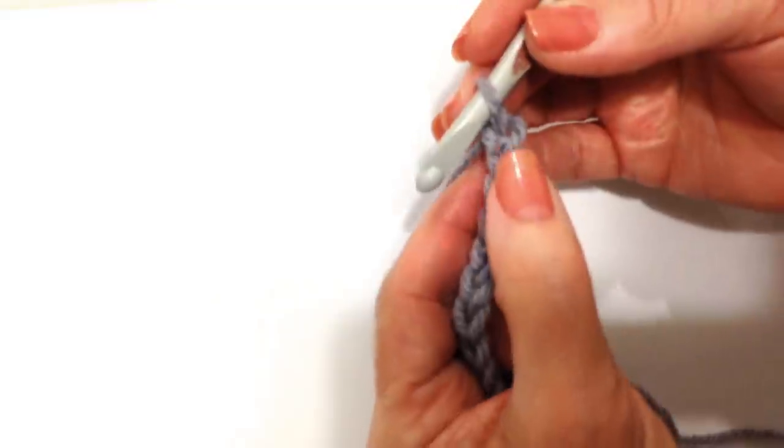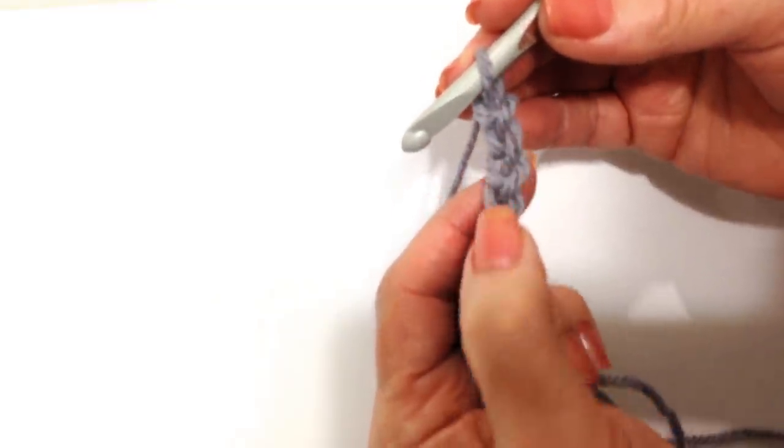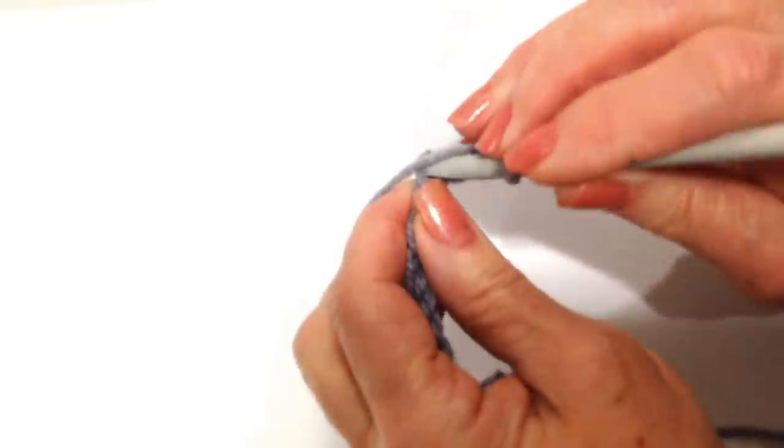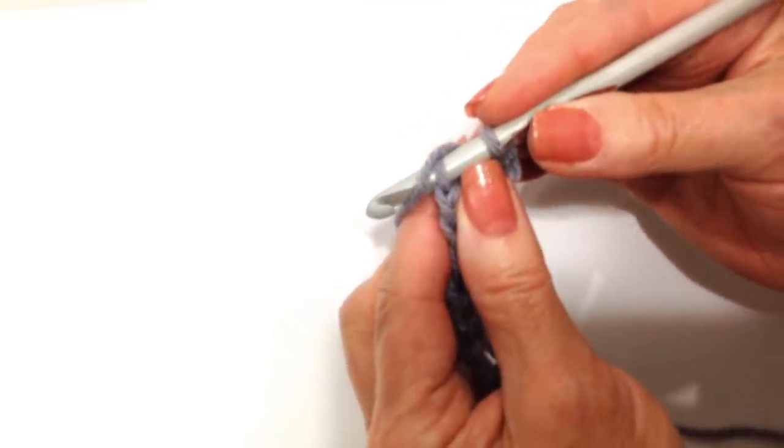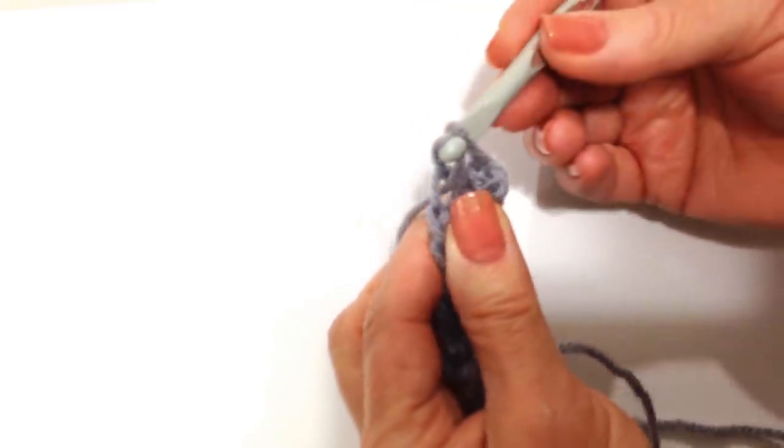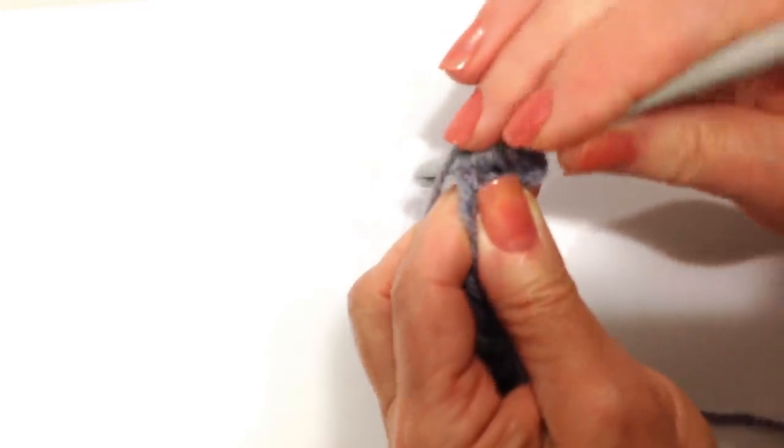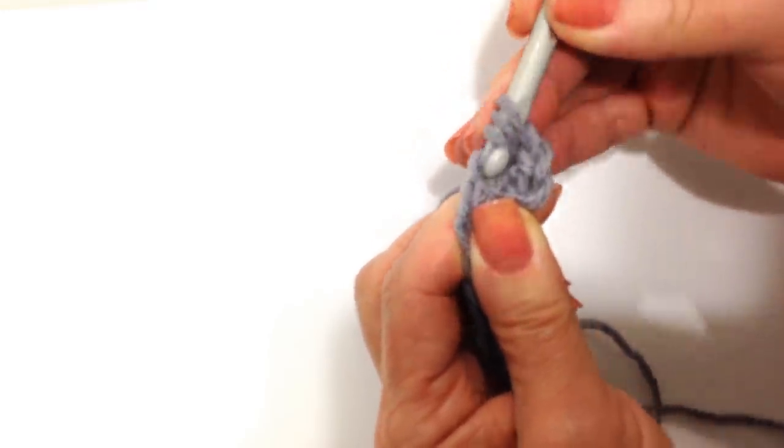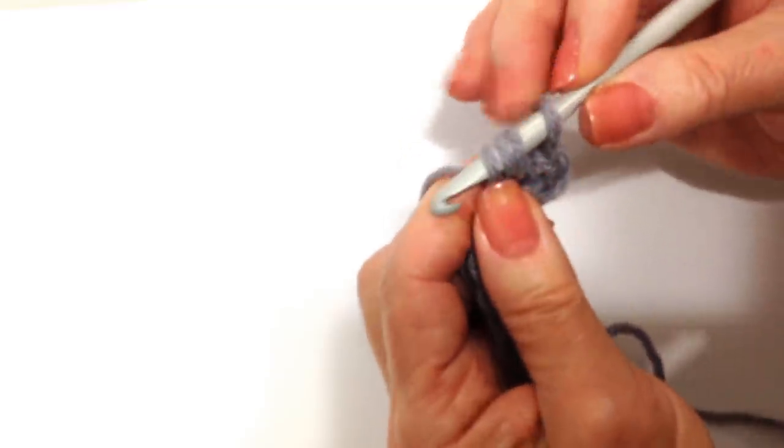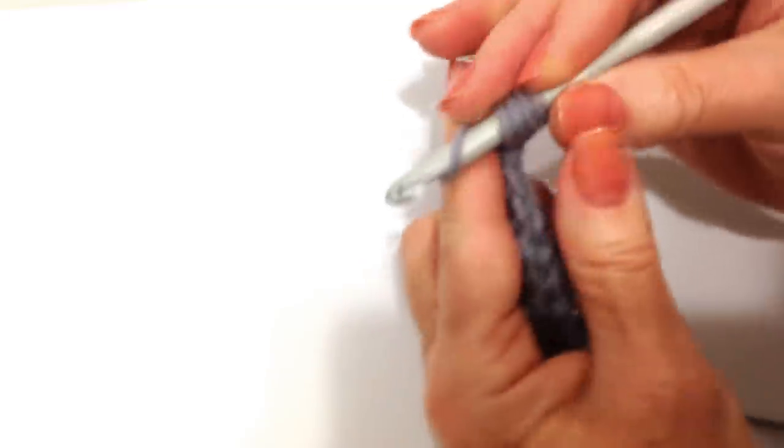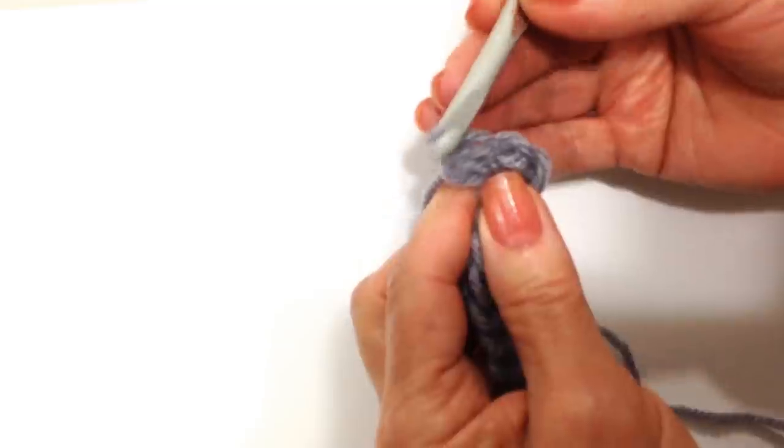In the fourth stitch from the hook, one, two, three, four, you're going to insert the hook through the stitch and pick up the yarn and pull it through. Now yarn over the hook and insert through the same stitch. Pick up the yarn and pull it through, and you will have four stitches on the hook. Pick up the yarn, pull it through all four.